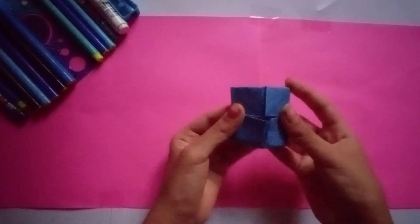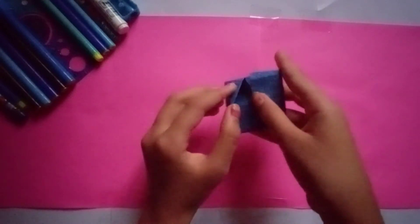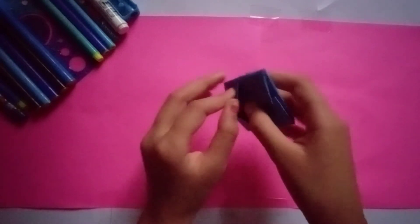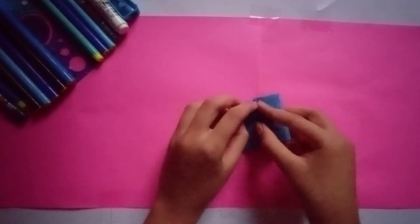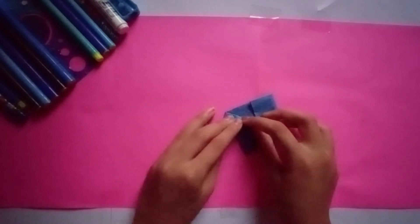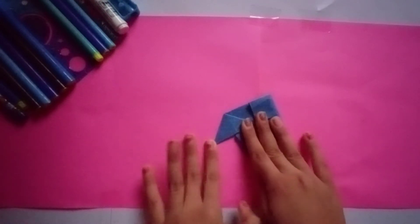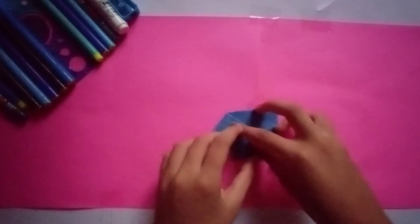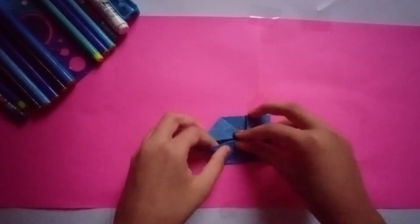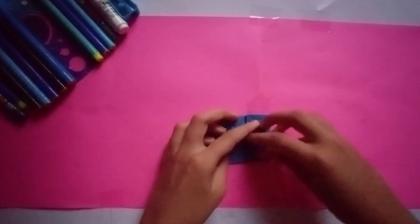If you see it carefully, you will see these four corners. Take these corners and unfold it like this. It will give you a triangle shape. Do it to all four corners.